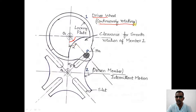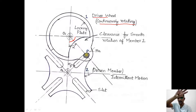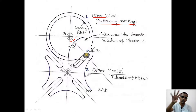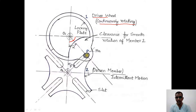The driver wheel rotates continuously. There is a locking plate on the driven member. As the driver wheel rotates, the pin enters a slot and the driven member rotates by 90 degrees — since there are four slots, 360 divided by 4 equals 90 degrees. Once the pin ejects, the locking plate locks the entire driven member until the pin engages the next slot. This is how continuous rotary motion is converted into intermittent motion.